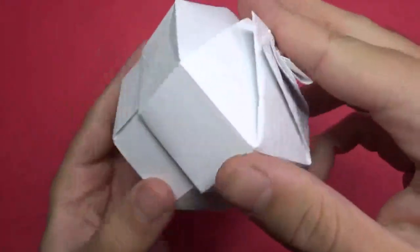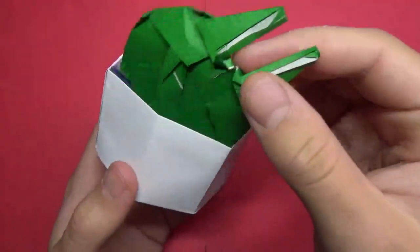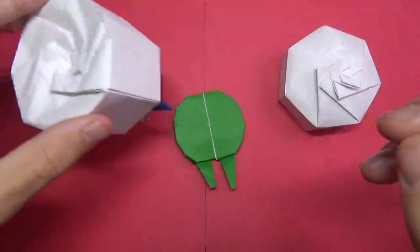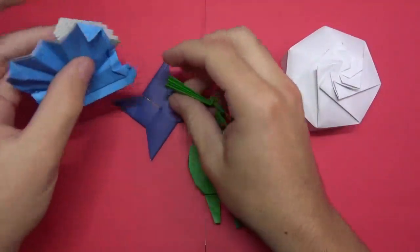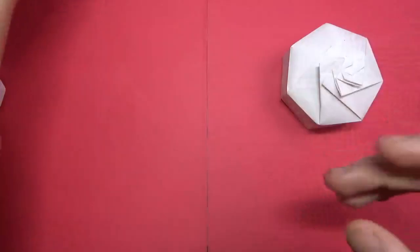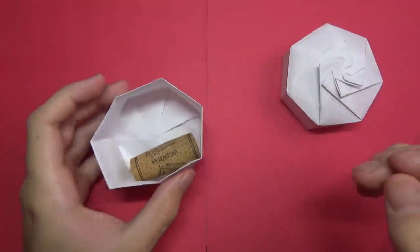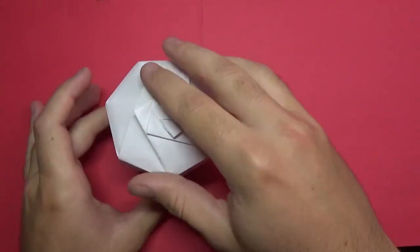And it is a container. You can use it to put stuff in, like origami models. Or you can use it for real stuff, like other stuff. Maybe a cork or whatever.